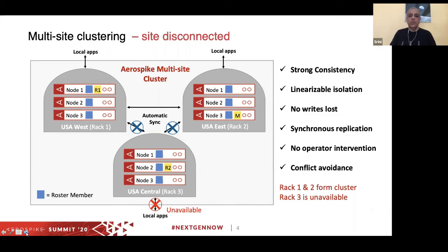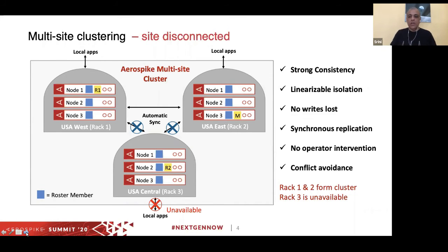Local apps on racks one and two continue to work fine. The local apps on rack three become unavailable — using Aerospike's strong consistency algorithm, rack three determines from the roster and its inability to communicate with racks one and two that it is a minority cluster and takes itself out of availability. When rack three gets reconnected, the extra copies of data created in racks one and two will be properly merged back into rack three so it can resume its portion of the load. Aerospike in multi-site cluster formation can continue with no operator intervention, conflict avoidance, and complete consistency during site failures.